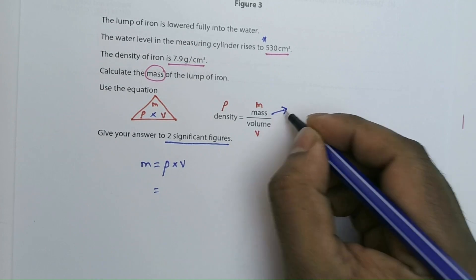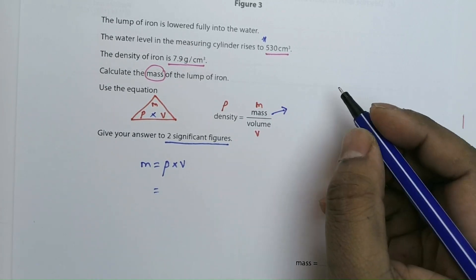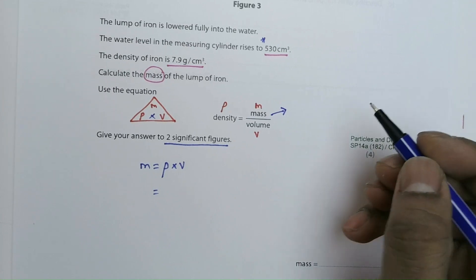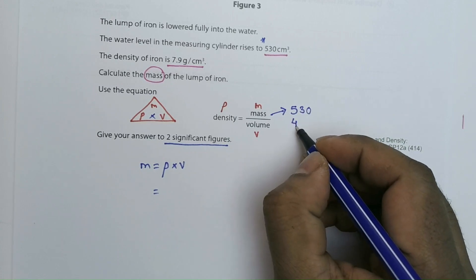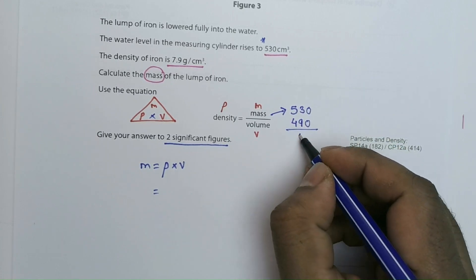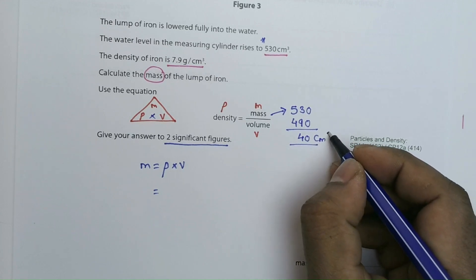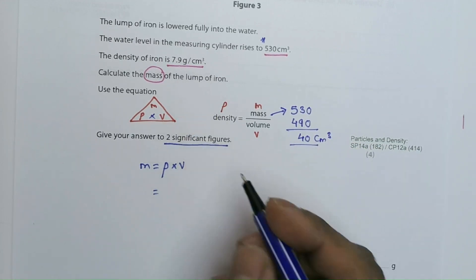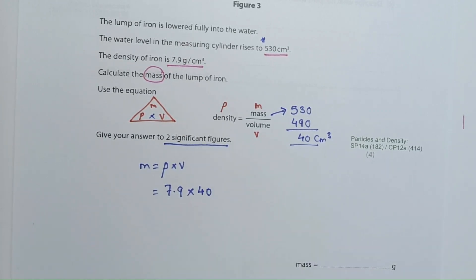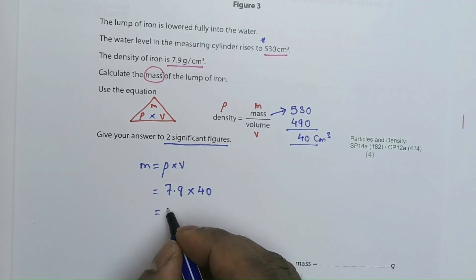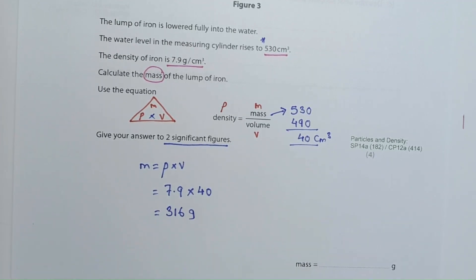So the volume is 40 centimeter cubed. Mass equals density multiplied by volume: 7.9 multiplied by 40 gives 316 grams. If you stop at 316, that gives you three marks. Writing this in two significant figures correctly would be 320 grams, earning the fourth mark.